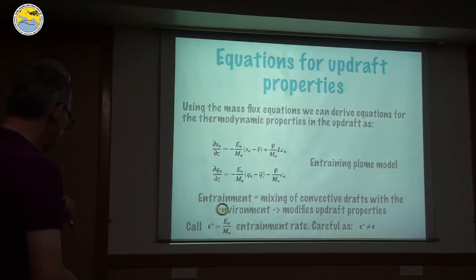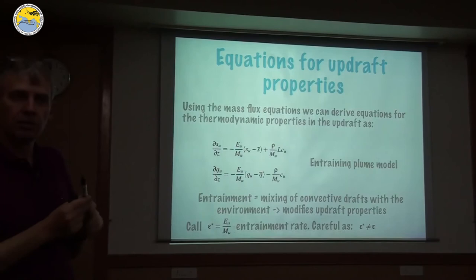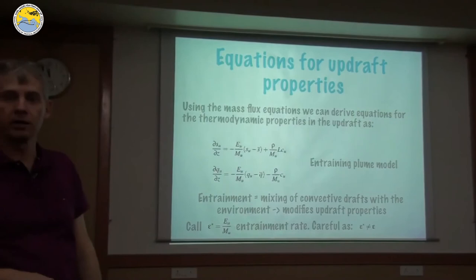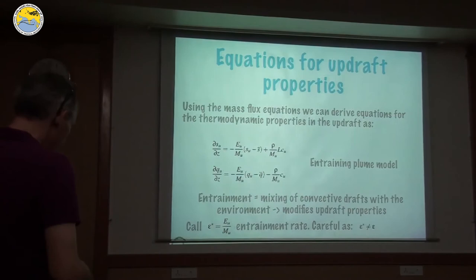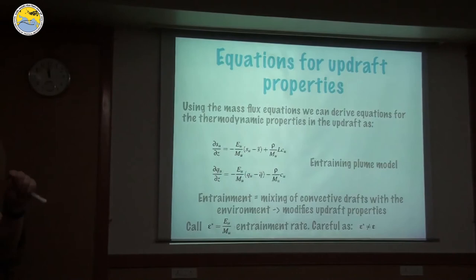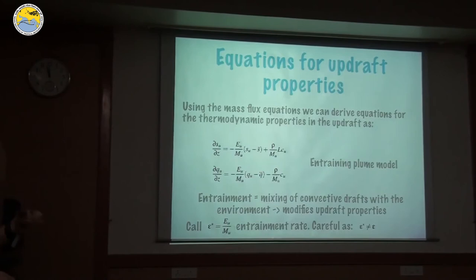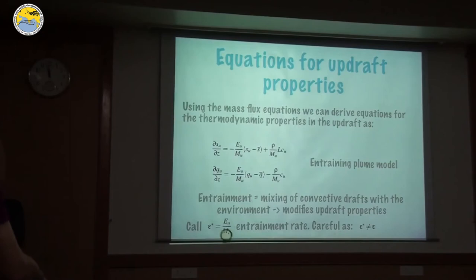The quantity E_u divided by M_u is often given another name — the entrainment rate epsilon — and in models, that's usually the entrainment rate that is applied. Just be aware that this has different units than the entrainment rate in the individual cloud equations: this one has units per meter, telling you how much entrainment happens per meter of ascent, rather than per second in time. Most models use the entrainment rate in units per meter.